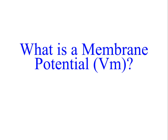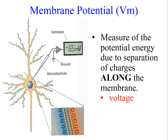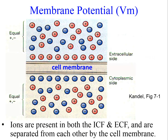But what is a membrane potential? The membrane potential, abbreviated as V_M (capital V with a subscript M for membrane), is a measure of the potential energy due to the separation of charges along the membrane. Whenever positive and negative charges are separated from one another, as is the case here, it creates a voltage. These charges come from ions present in both the intracellular fluid and the extracellular fluid, and are separated from one another by the cell membrane.